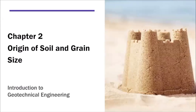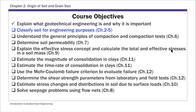For today's lecture, we're going to start Chapter 2, Original Soil and Grain Size. This is one of the main course objectives. If you look at the course objective list I showed in a previous lecture, Chapter 2 on Particle Size is part of the second course objective. The purpose of studying particle sizes is basically to classify soil for engineering purposes. Chapter 2 through 5 will focus on this second course objective.